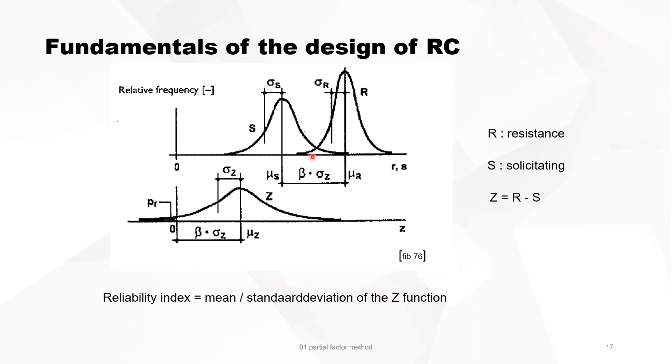So R is the resistance, S is the soliciting force. If you take the difference between them, you know how safe your structure is. We call it the variable Z. It's the difference between resistance and solicitation. If you take the probability of Z, you have a mean and a standard deviation. The reliability index, the beta factor, is nothing more than the mean divided by the standard deviation of the Z function. So it's a measure of how much reserve we have in the structure.